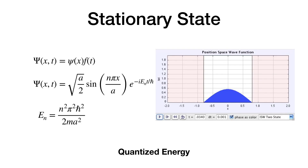Suppose you break the wave function Psi into a space part and a time part. Skipping many steps, you get a solution that's sine(nπx/a) times an exponential term with time, and discrete energy values such that the wave function is zero at x=0 and x=a — because the particle can't penetrate the walls. These are quantized energy levels. If you plot the probability density, you get a stationary state — the time goes away when you find the complex conjugate, and the state just stays there.